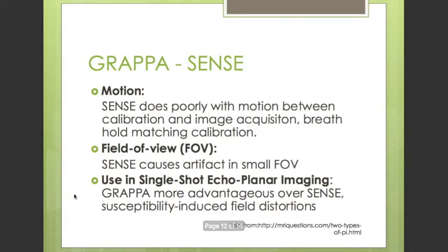Motion is also an important criterion. If SENSE conducts calibration before imaging, differences in motion between the calibration time and imaging time may cause distortion. A related problem is breath-holding: the patient may not hold the same amount of air during imaging as during calibration. Combined with SENSE's existing susceptibility sensitivity, this change in air causes significant artifacts in thoracic imaging. Regarding field of view, the reduction of field of view creates aliasing in SENSE whereas GRAPPA is more tolerant, though SENSE benefits from this aliasing effect. For single-shot EPI, GRAPPA is more preferable due to field distortion caused by susceptibility differences.